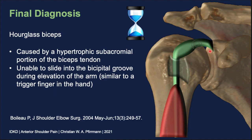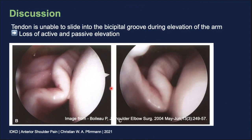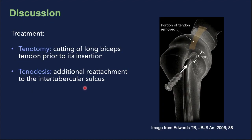This is an enlargement in the intra-articular subacromial part — a hypertrophic portion of the biceps tendon unable to slide into the bicipital groove during elevation, similar to a trigger finger in the hand. This was first described by Pascal Boileau. Here is an interesting arthroscopy image where you can see in elevation that there is folding up of the tendon intra-articularly because the tendon cannot slide into the bicipital groove. The treatment is usually done by tenotomy or tenodesis.